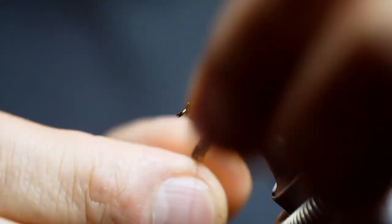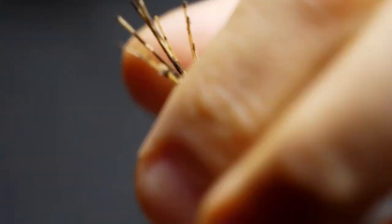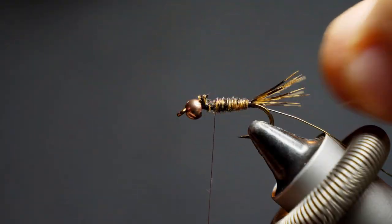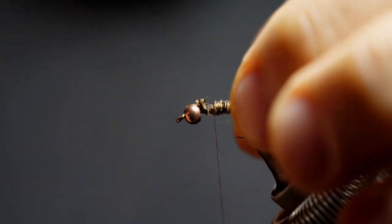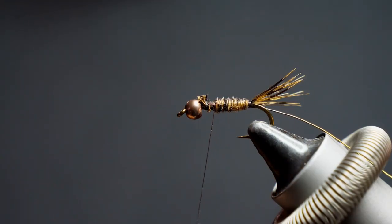And now we start wrapping the pheasant fibers, and I'm going to wrap in the same direction that my thread is going. That way, when I lock it down at the end with the thread, the thread's going to work with the curve and lock it as opposed to pushing it backwards on itself.